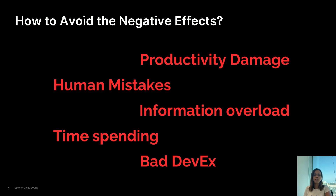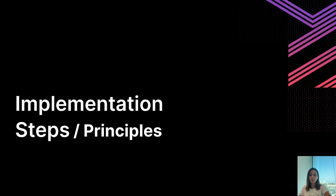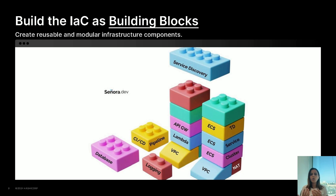Therefore, I will now present the steps for proper implementation so you can follow along and do it yourself — providing developers with the infrastructure for independent work. In this first step, we focus on creating our infrastructure as code using building blocks. Think of these blocks like Lego pieces. Each piece is a small, reusable module that represents a specific part of infrastructure, such as a VPC, subnet, or EC2 instance. By using modular components, we ensure that our infrastructure is both reusable and maintainable, allowing us to piece together these blocks to form larger and more complex systems with ease.